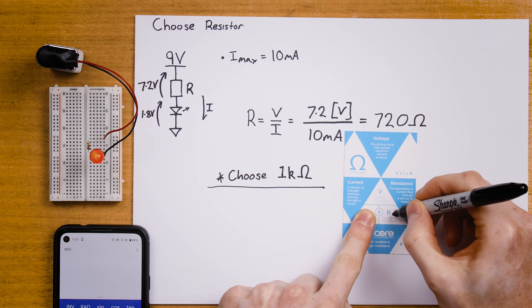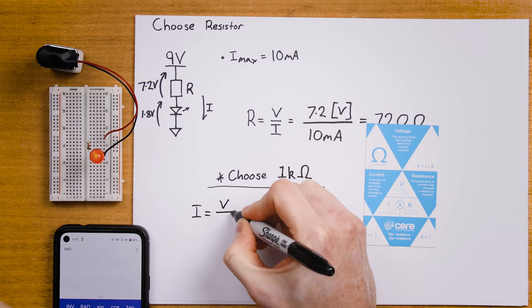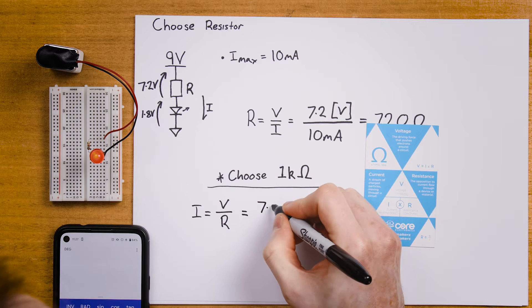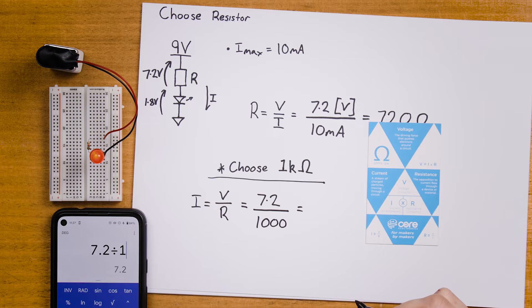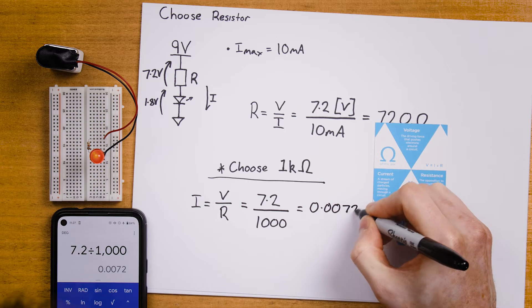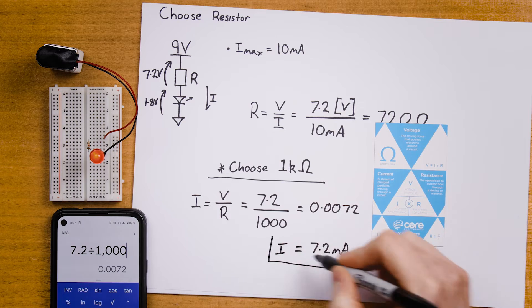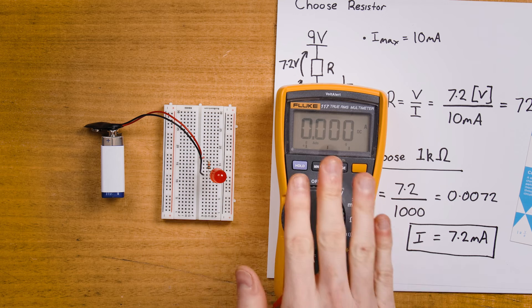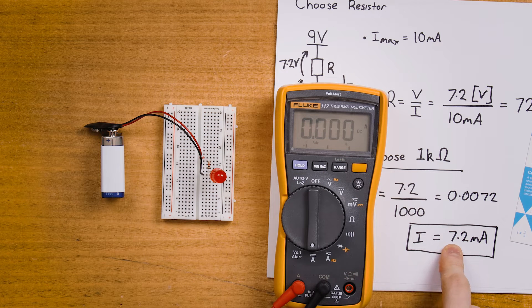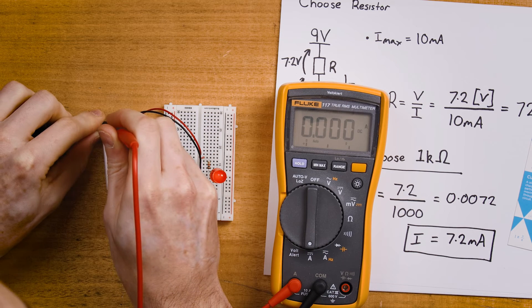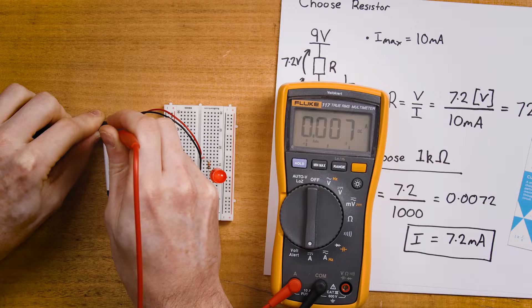But what will the current actually be? Ohm's law comes in again. The actual current — cover up I — is V on R, the chosen resistance. I equals V on R. The voltage across the resistor is still 7.2 volts over 1000 ohms, which gives 0.0072, or 7.2 milliamps. I have my multimeter set to current and we're looking for about 7 milliamps. Measuring the current, we get 0.007 amps — 7 milliamps. Nice.